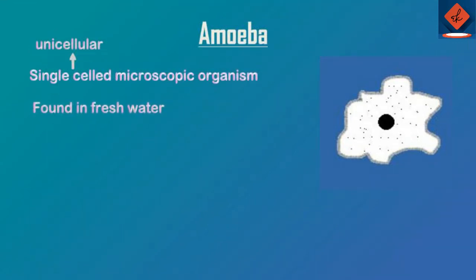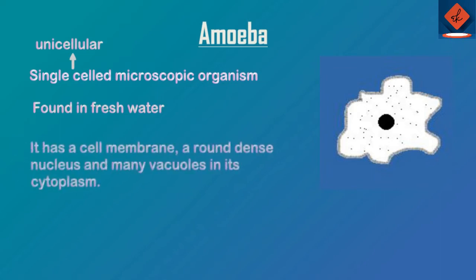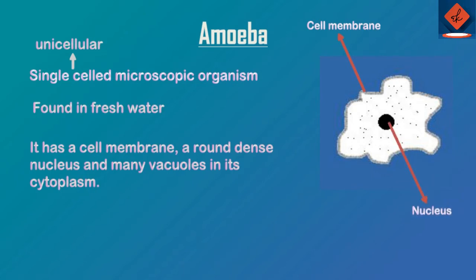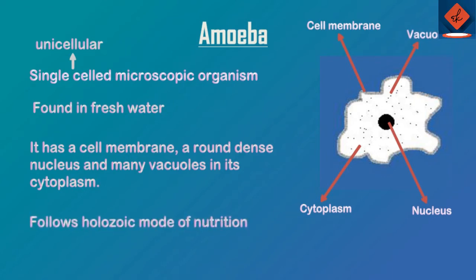Amoeba is found in fresh water. It has a cell membrane, a round dense nucleus at its center, many vacuoles — small compartments of water — and the rest of the part which we call the cytoplasm. Amoeba follows holozoic mode of nutrition.